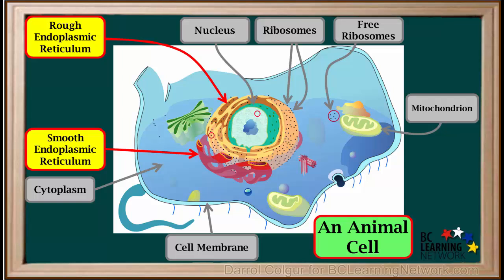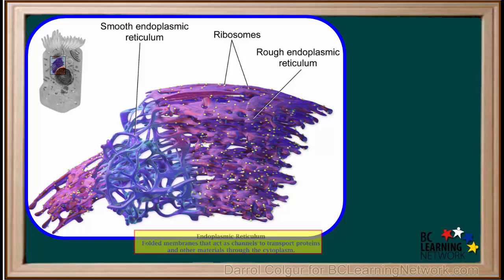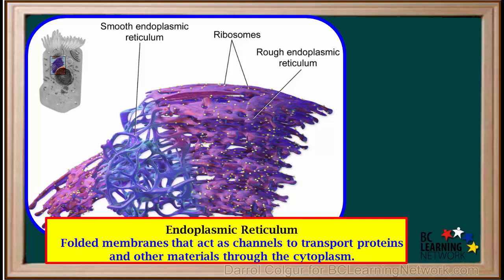The smooth endoplasmic reticulum has a smoother surface. It is connected to the outside of the nucleus and contains tubules that extend throughout the cell. Taking a closer look at the endoplasmic reticulum, we see that both the rough and smooth forms consist of a complex network of small channels. Notice the ribosomes shown on the rough ER. The endoplasmic reticulum consists of folded membranes that act as channels to transport proteins and other molecules throughout the cytoplasm.